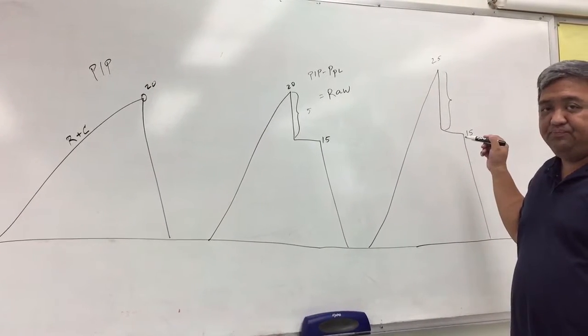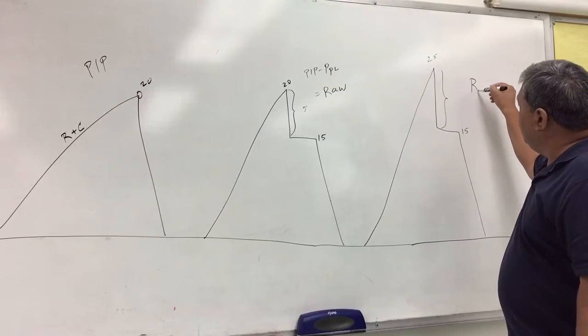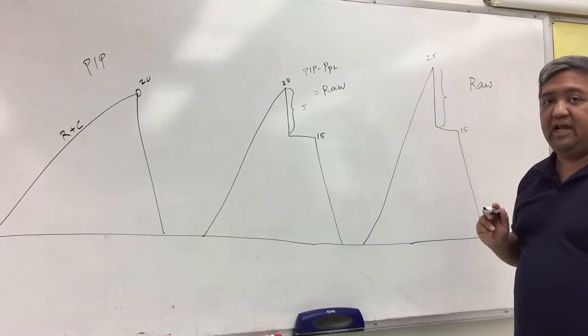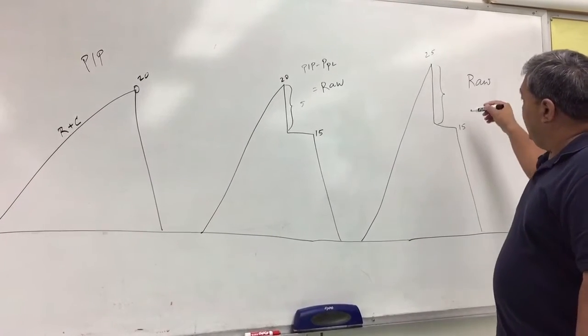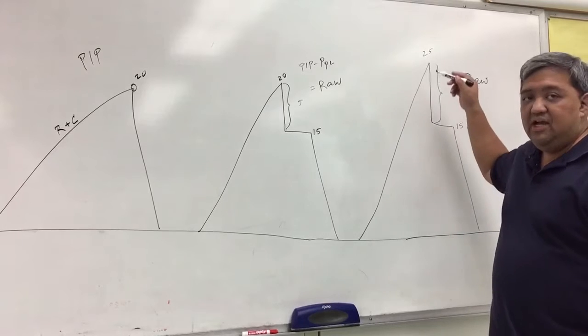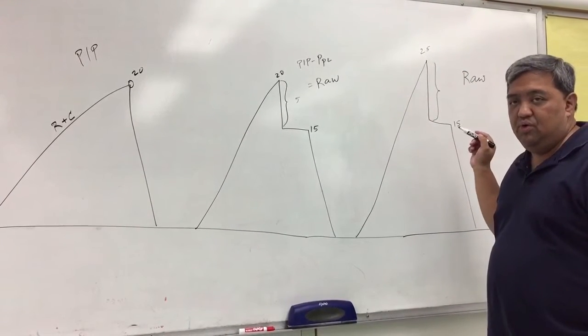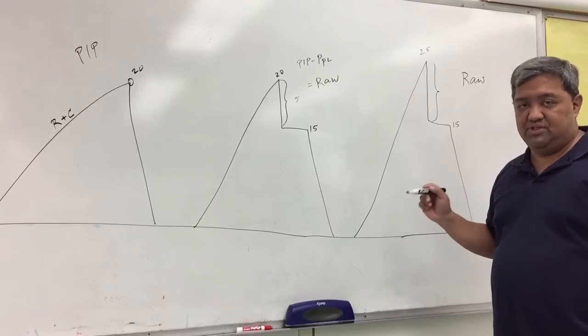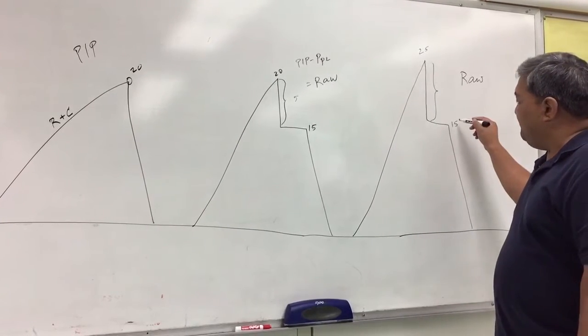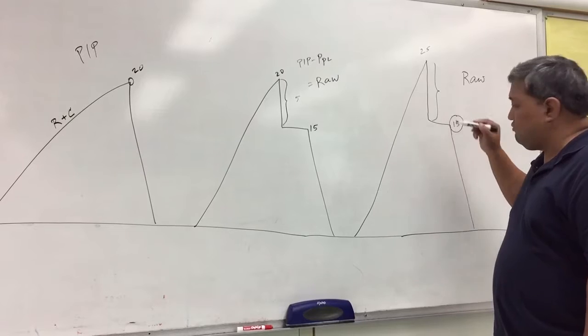stays the same, then we could conclude that this is an airway resistance problem. Any increase in PIP with no change in the plateau means it is an airway resistance problem. However, if you see any changes on